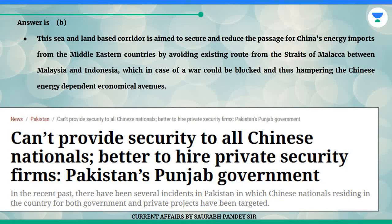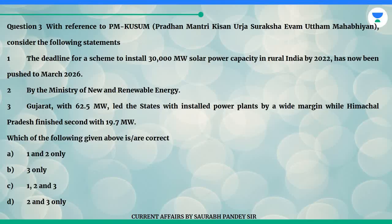Answer is B. This sea and land-based corridor is aimed to secure and reduce the passage for China's energy imports from the Middle Eastern countries by avoiding the existing route from the Straits of Malacca between Malaysia and Indonesia, which in case of a war could be blocked, thus hampering Chinese energy-dependent economical avenues.